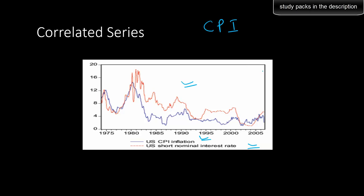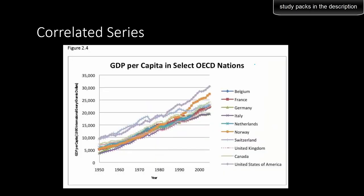That's where Granger causality comes into the picture. In such scenarios, to understand the relationship between these two time series, we need to understand what Granger causality is. Here is another example: the GDP per capita for the OECD nations are very correlated — they are upward trending. So if we were to predict the GDP for a given OECD nation, we can make use of the GDP growth for other OECD nations, and that would help in improving the forecast.